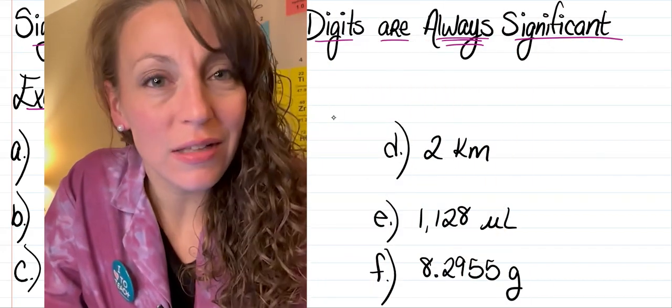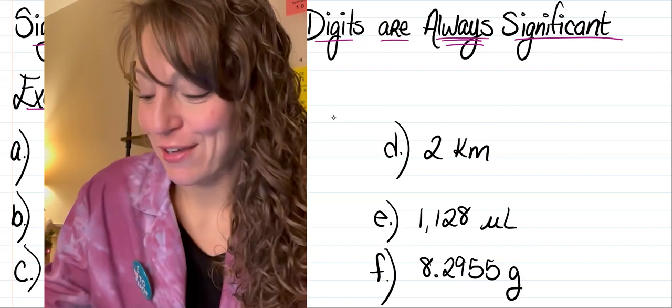In letter D, I've got two kilometers, which means I've got just one significant figure.